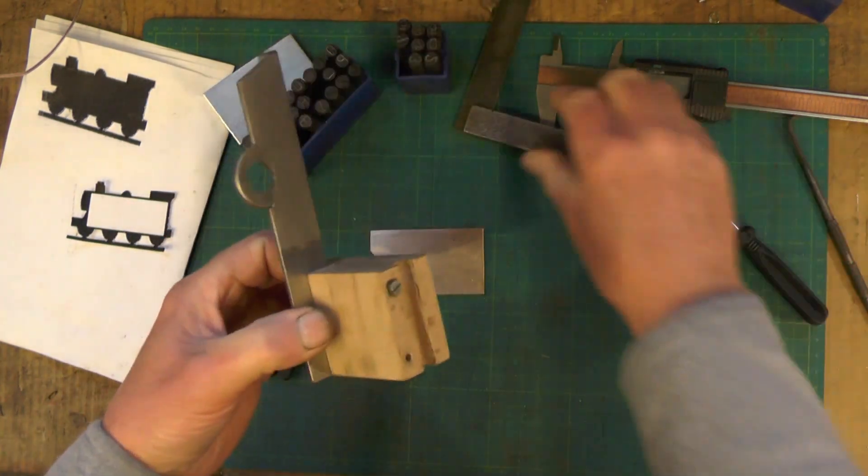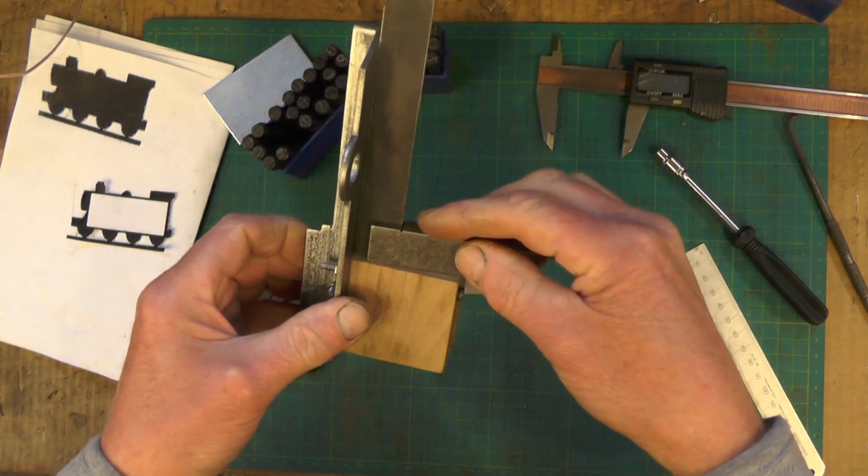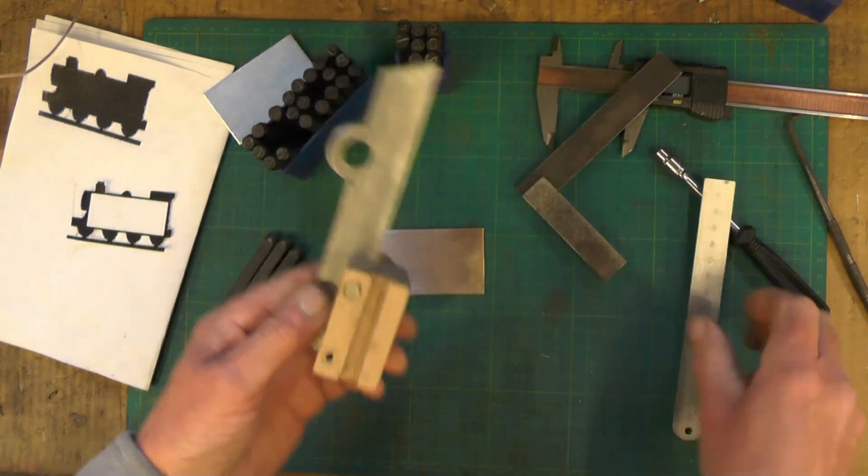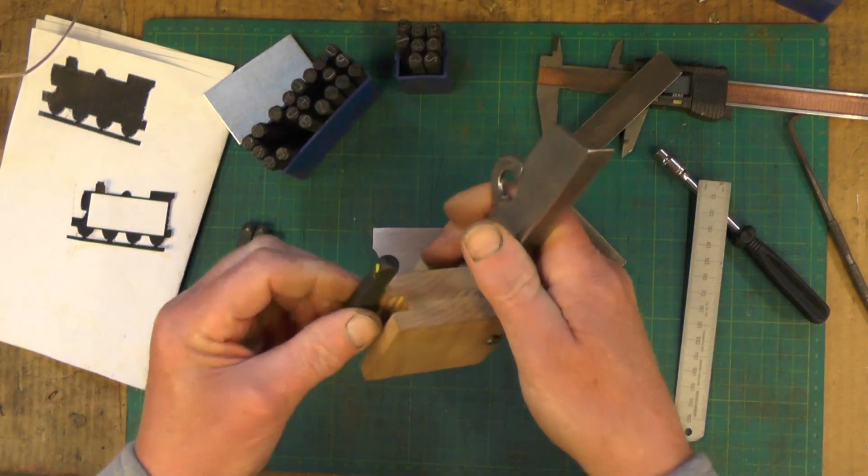That's going to bolt onto this angle using, in my case, 4BA. The only thing that's important is you've got to make sure everything's going to be square and parallel so that when the stamp's in it, it's going to be in line with everything.